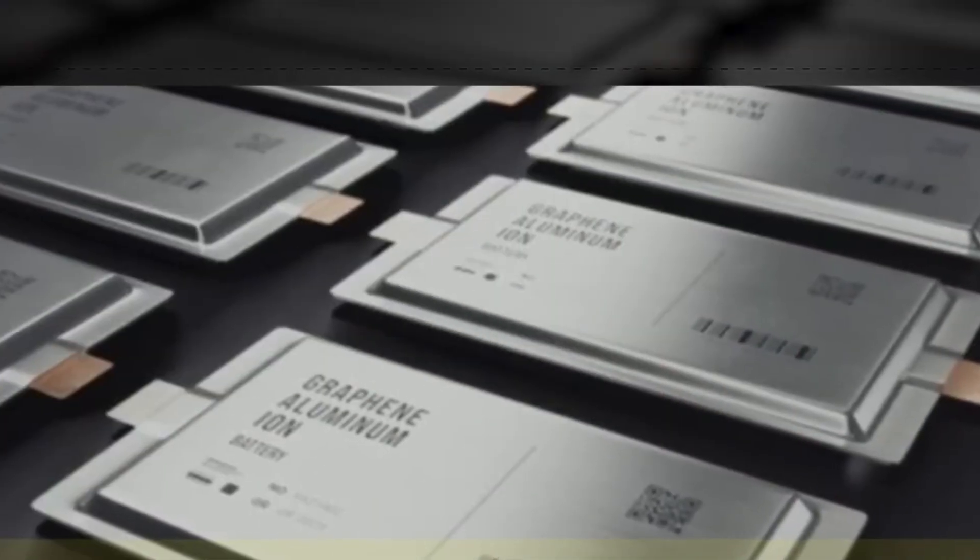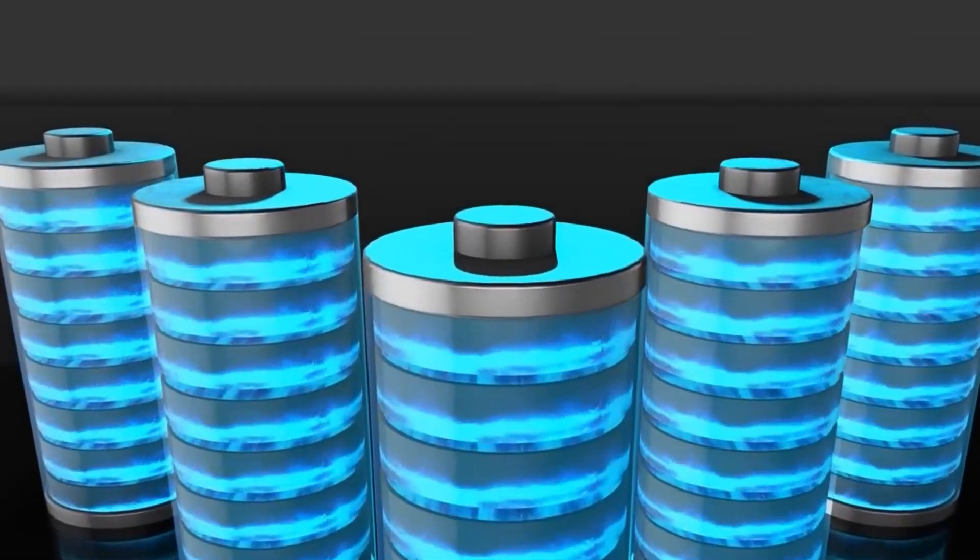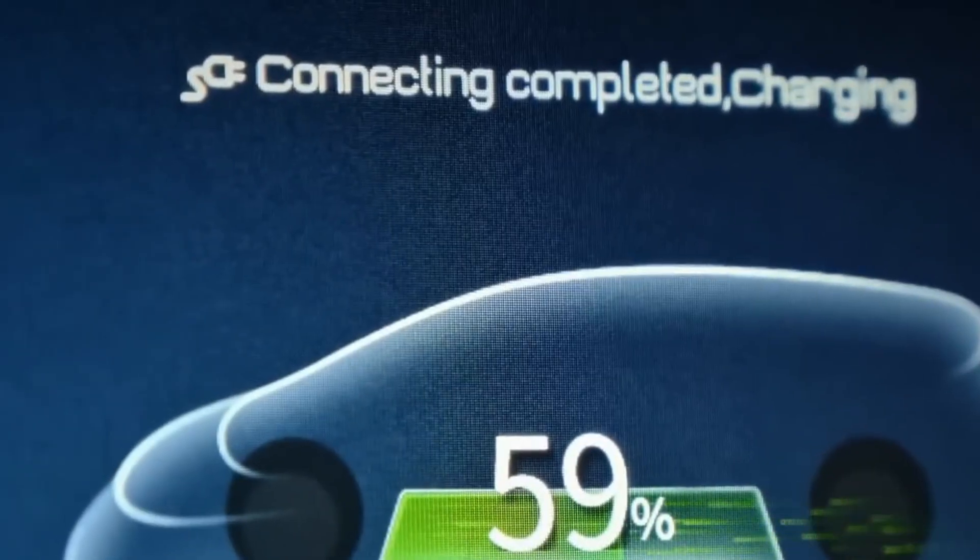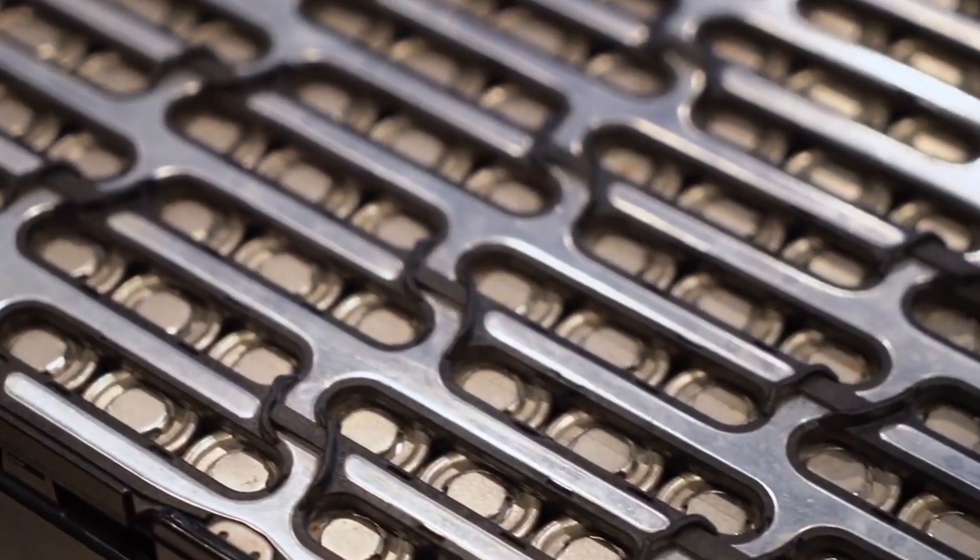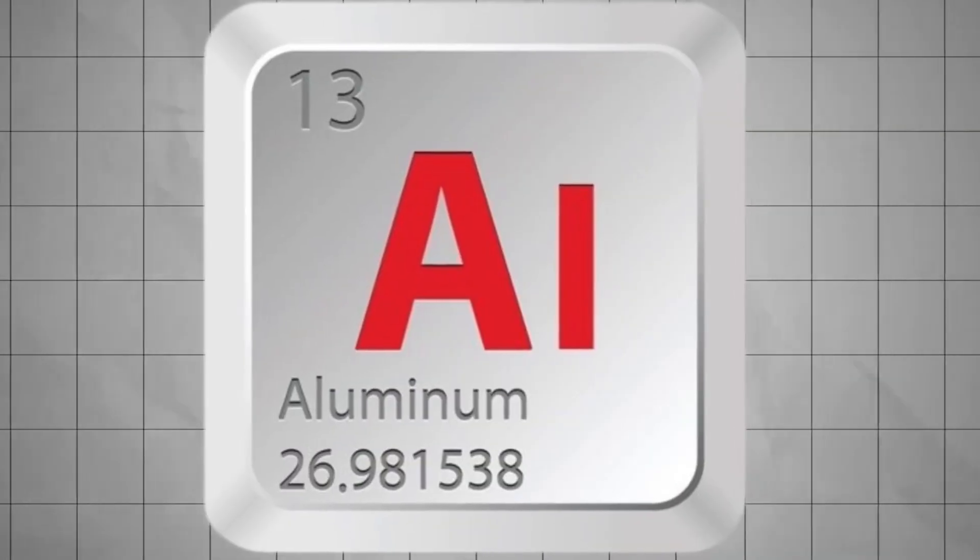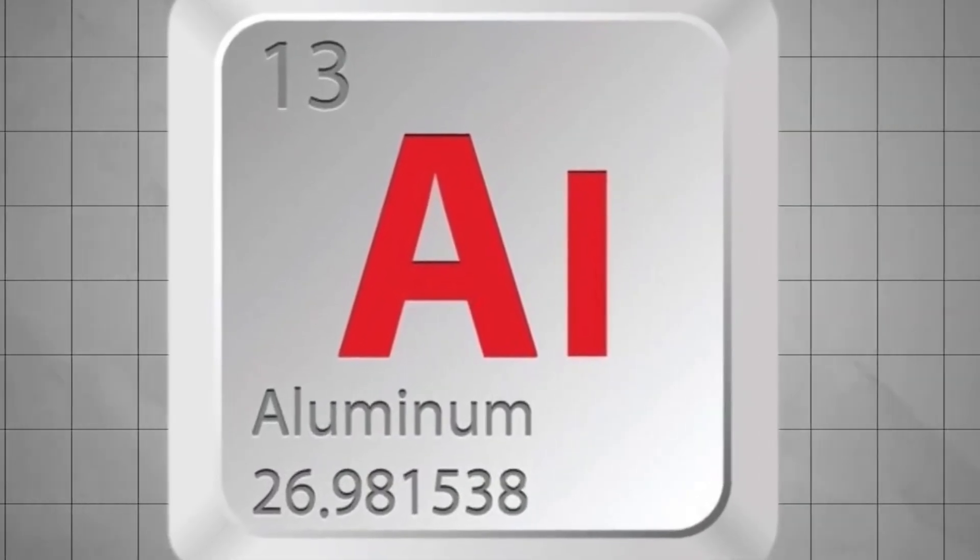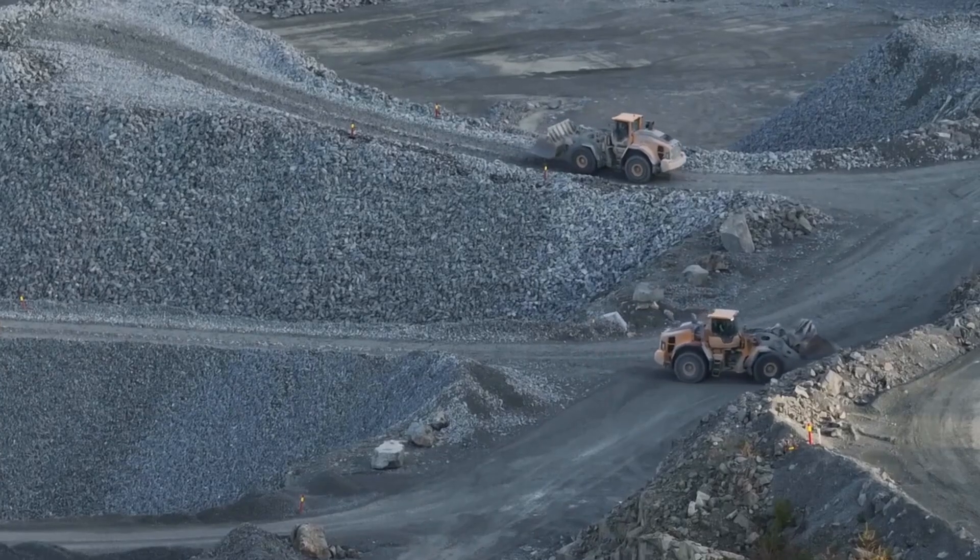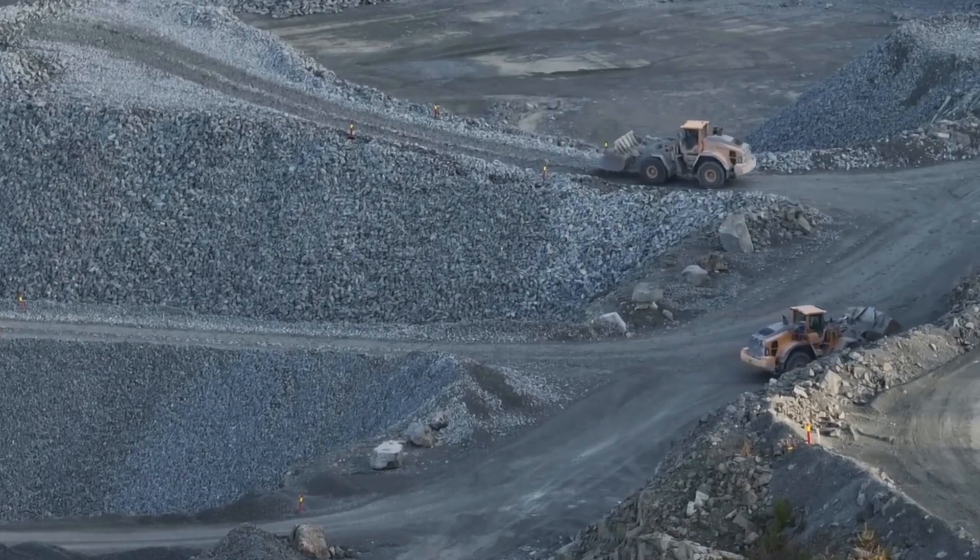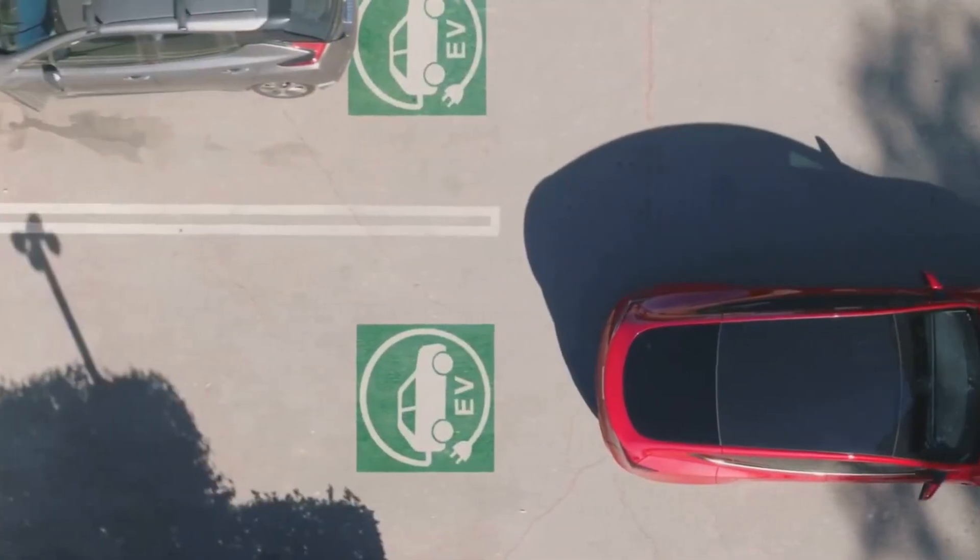Tesla knows what this means. The upcoming Model 2, rumored to start under $15,759, is their answer to mass market domination. It won't just be cheaper, it will outperform everything in its class with over 400 miles of range and a full recharge in under 15 minutes.